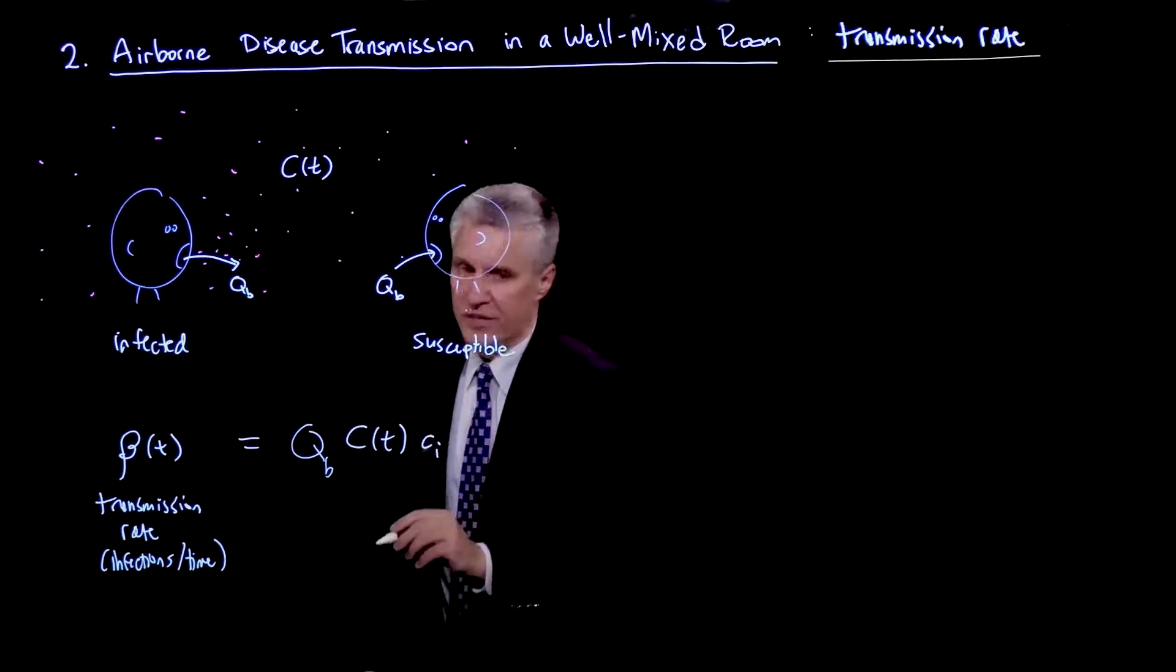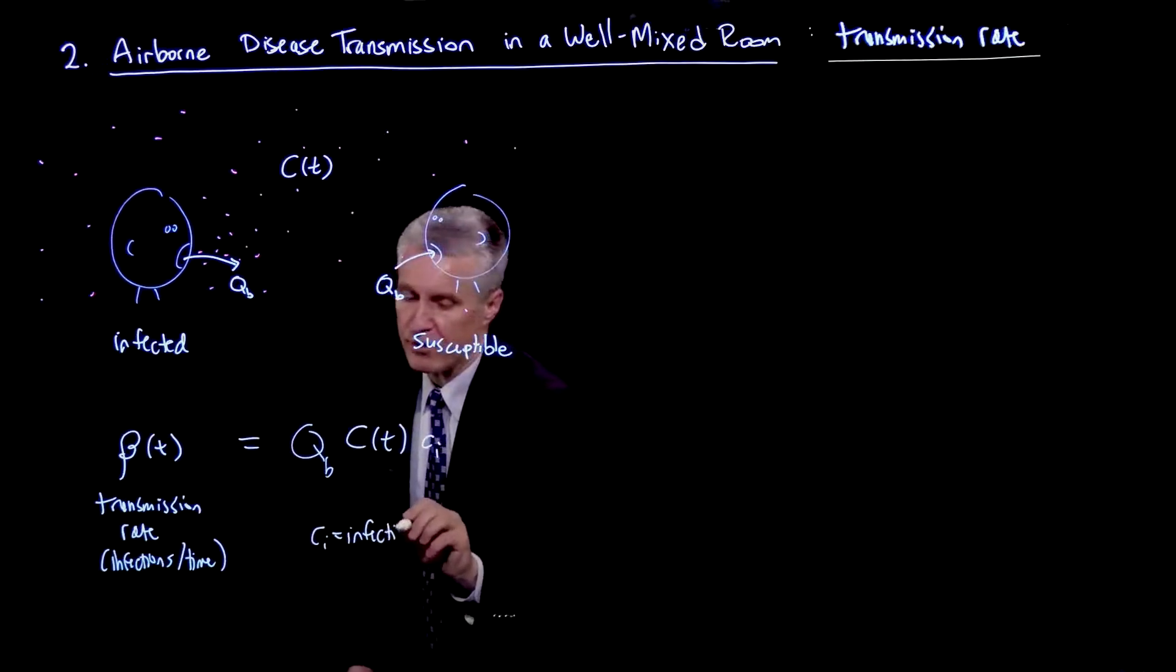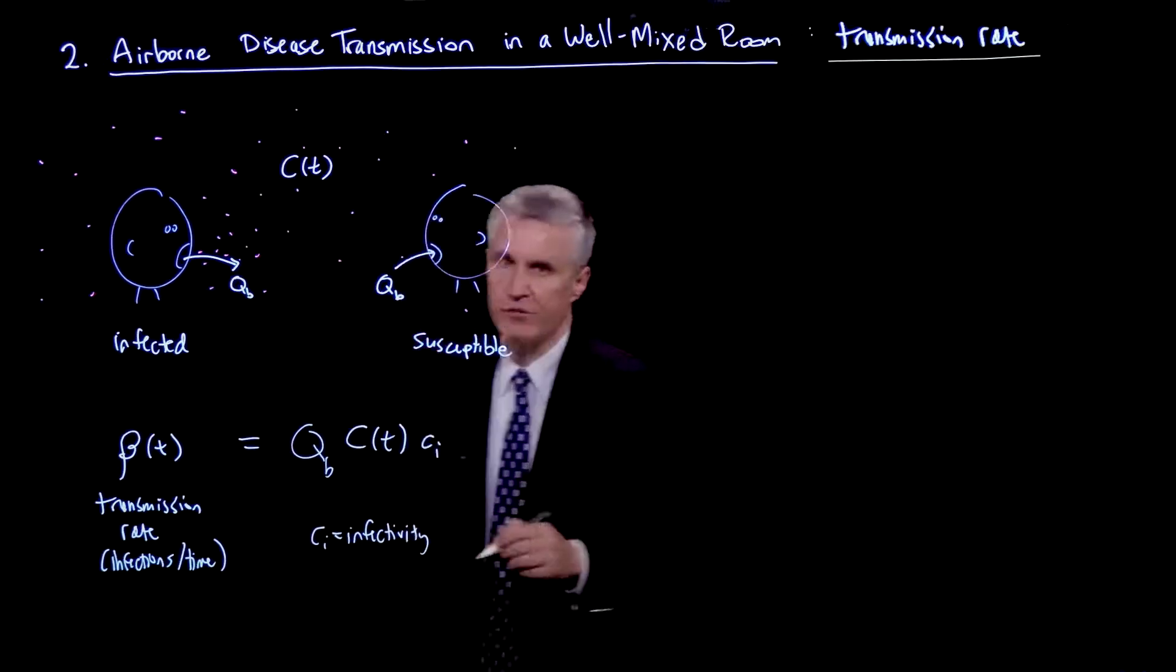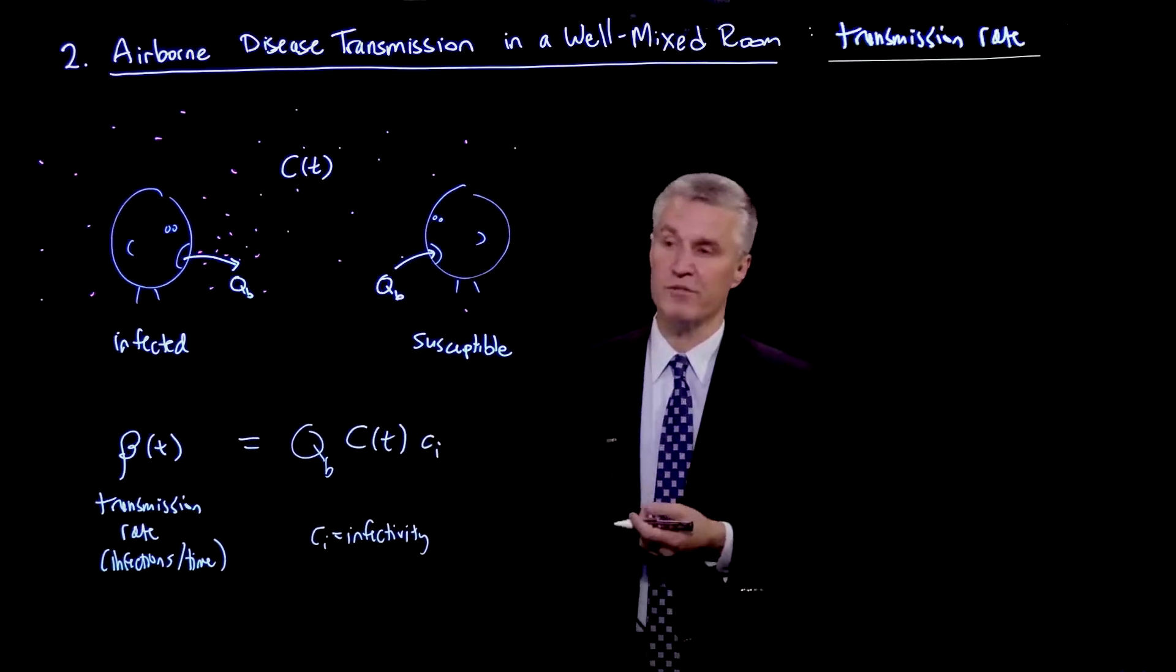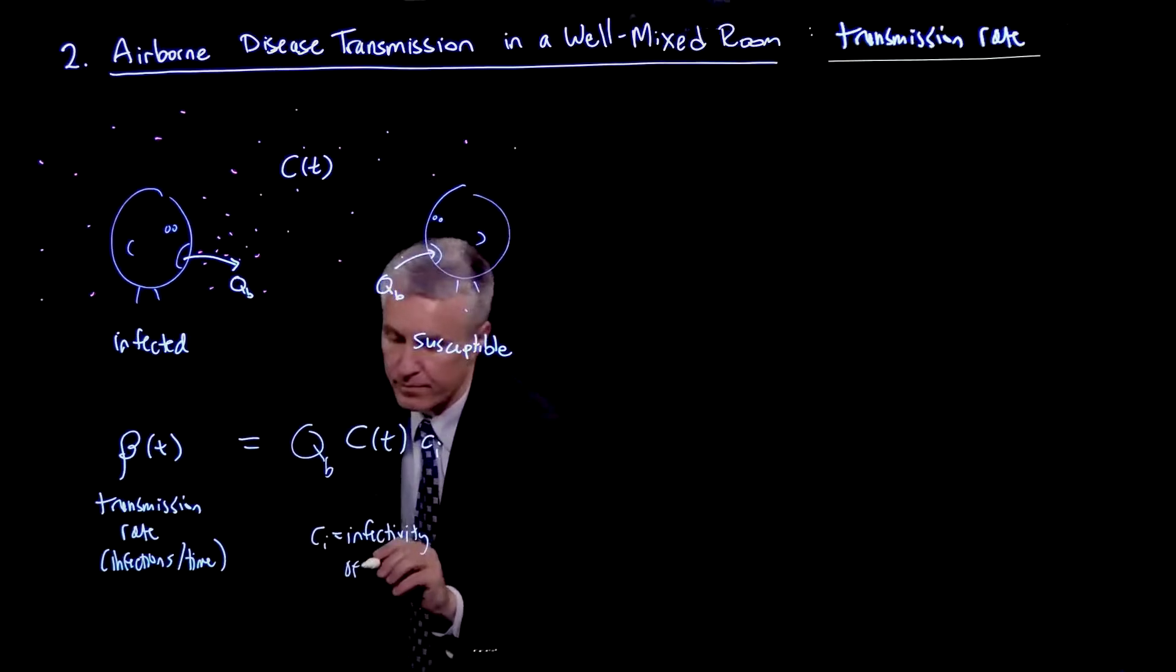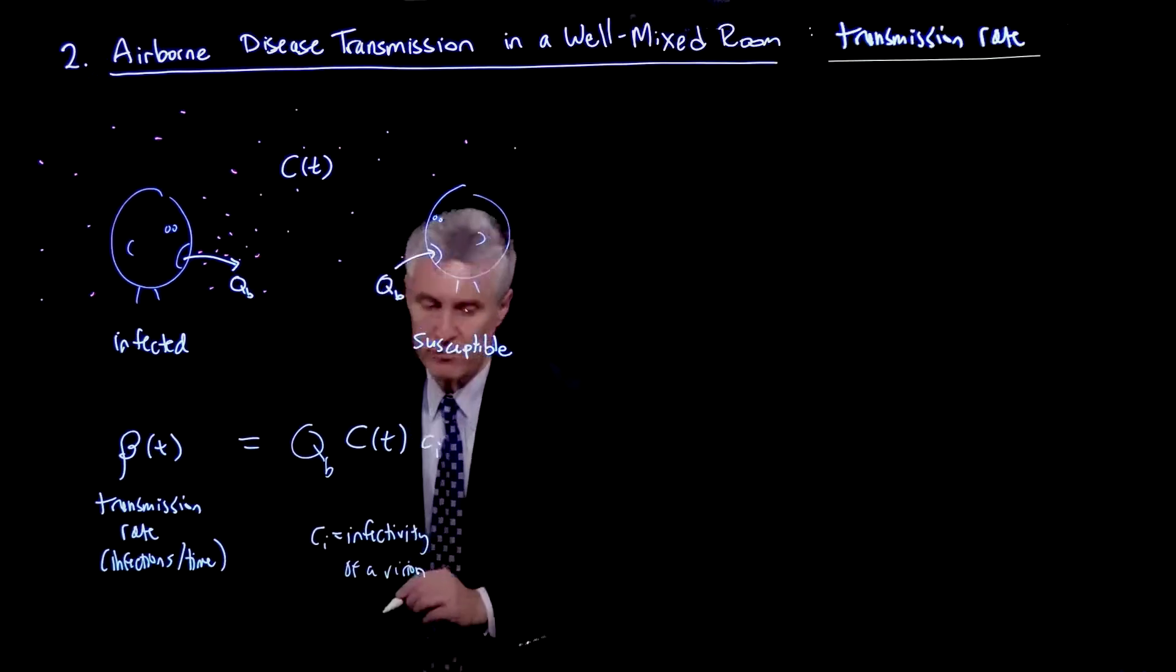There'll be a quantity Ci, which we mentioned earlier, which is the infectivity. And that's the probability that an individual virion actually causes this person to get sick and to become infected themselves. So this is the infectivity of an individual virion.